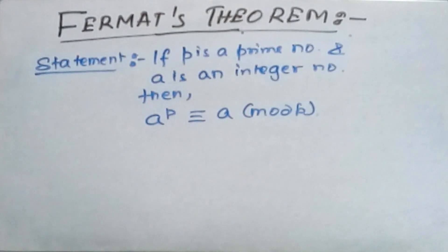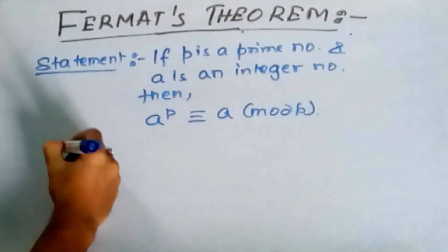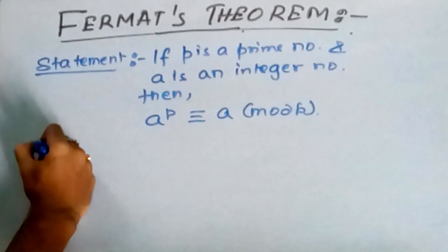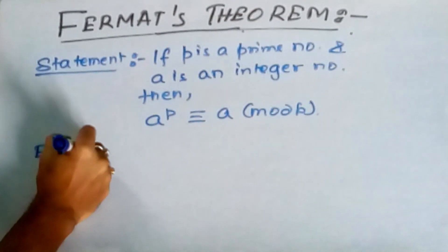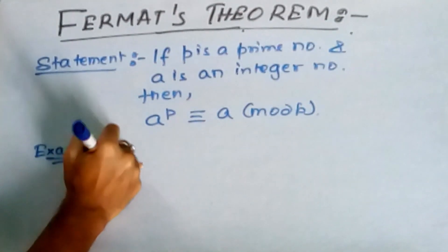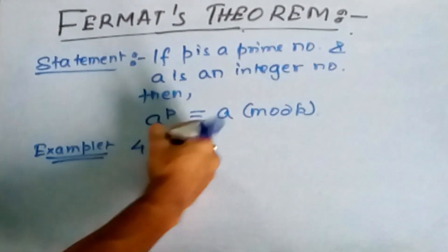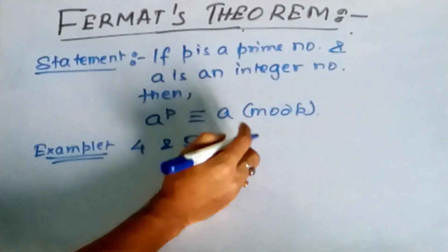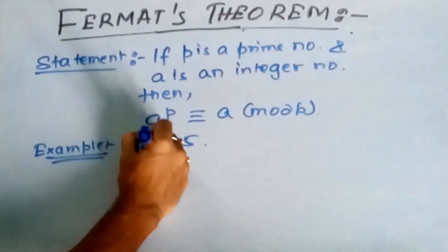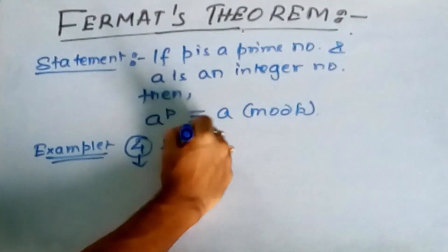What do I mean with this statement? With the help of an example I am showing. Since 4 is an integer number and 5 is a prime number, so this is nothing but a and this is p.